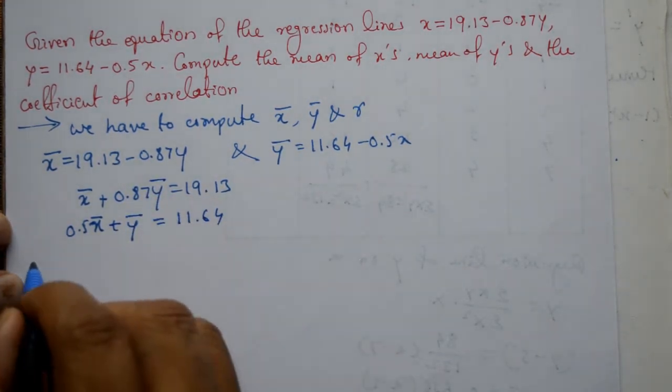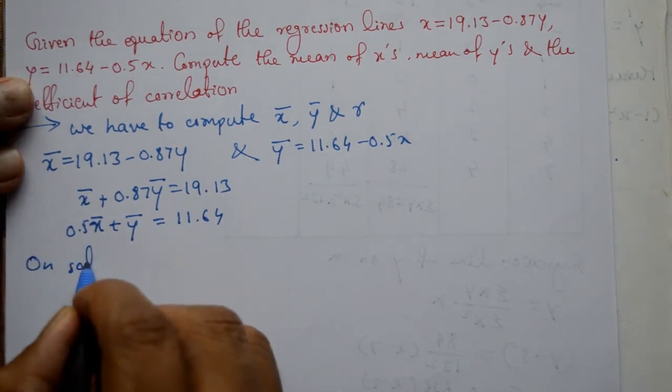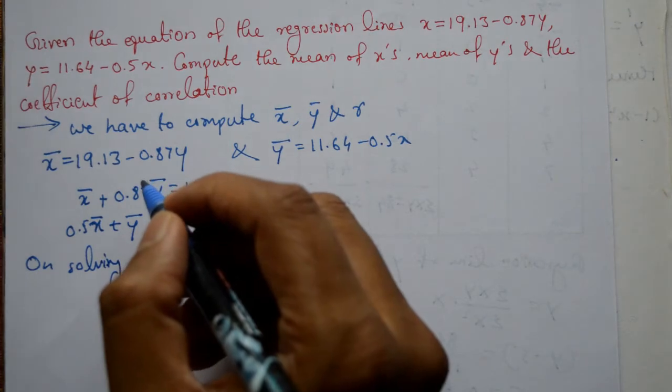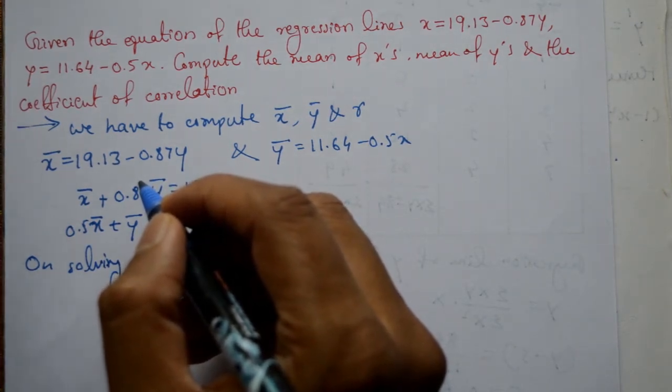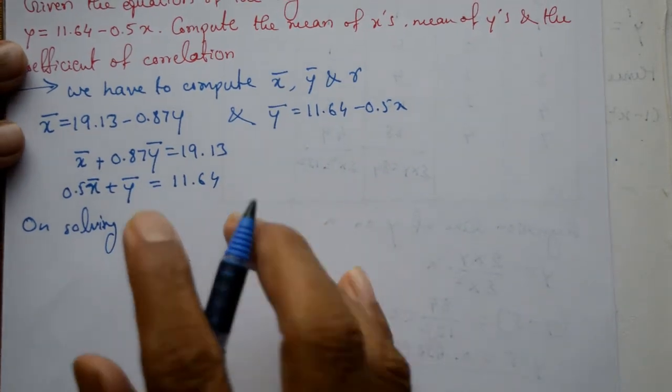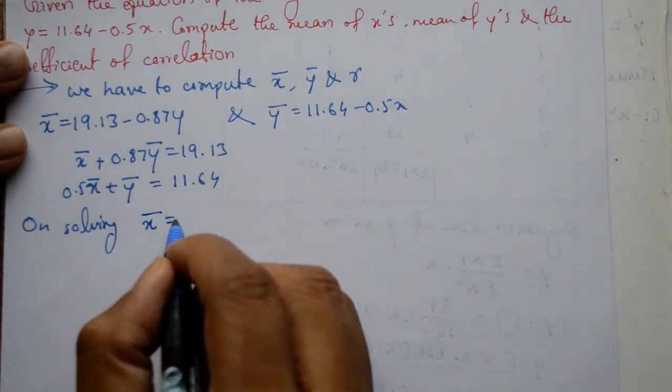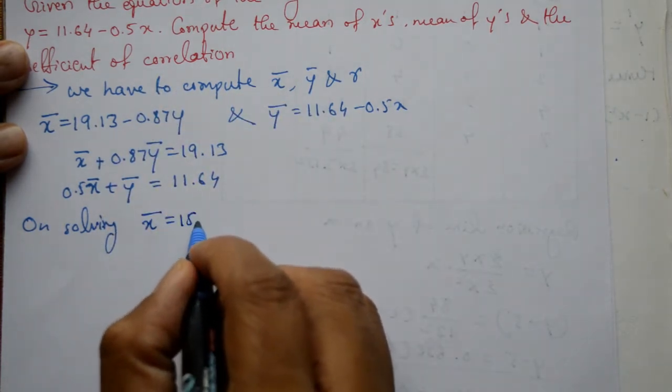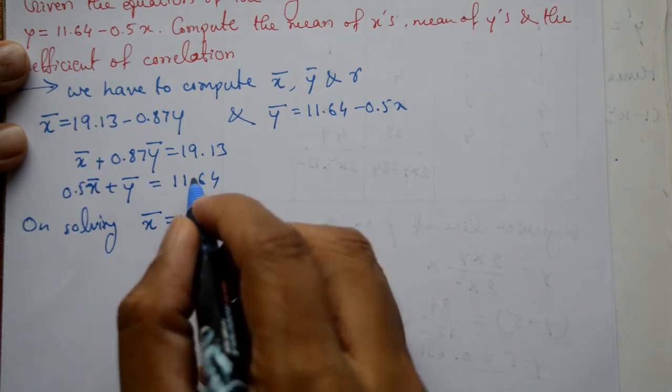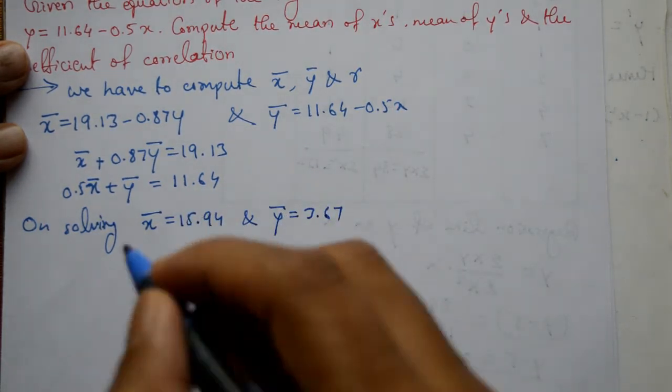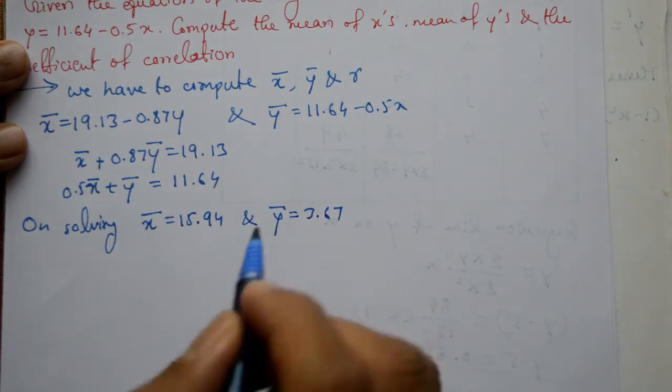Solving these two equations, on solving, it is very simple, you can use a calculator. If you want more videos, go to my YouTube playlist where videos are arranged subject-wise. On solving these two equations, x bar becomes 15.94 and y bar that is equal to 3.67. So we got x bar and y bar, now we have to find coefficient of correlation.